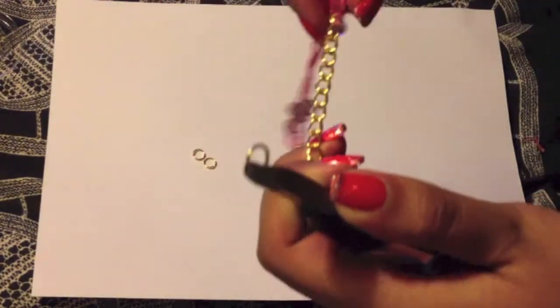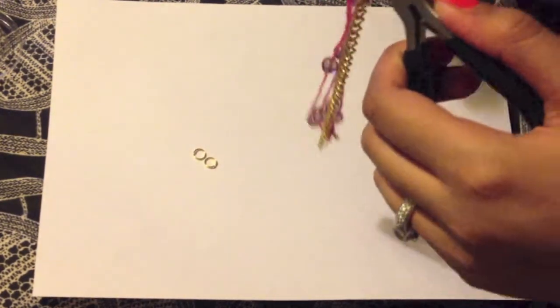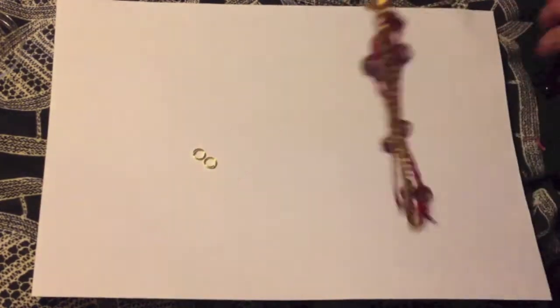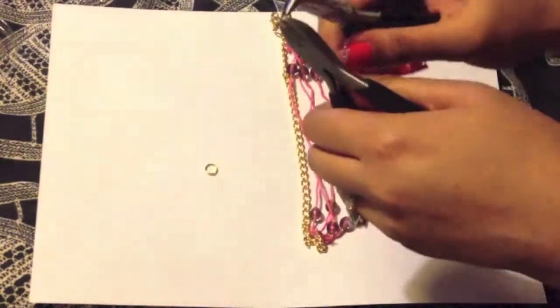After you have finished tying the threads onto the chain, you want to add two jump rings on each side of the bracelet. On one of the sides, before you close the last jump ring, add on your lobster clasp.